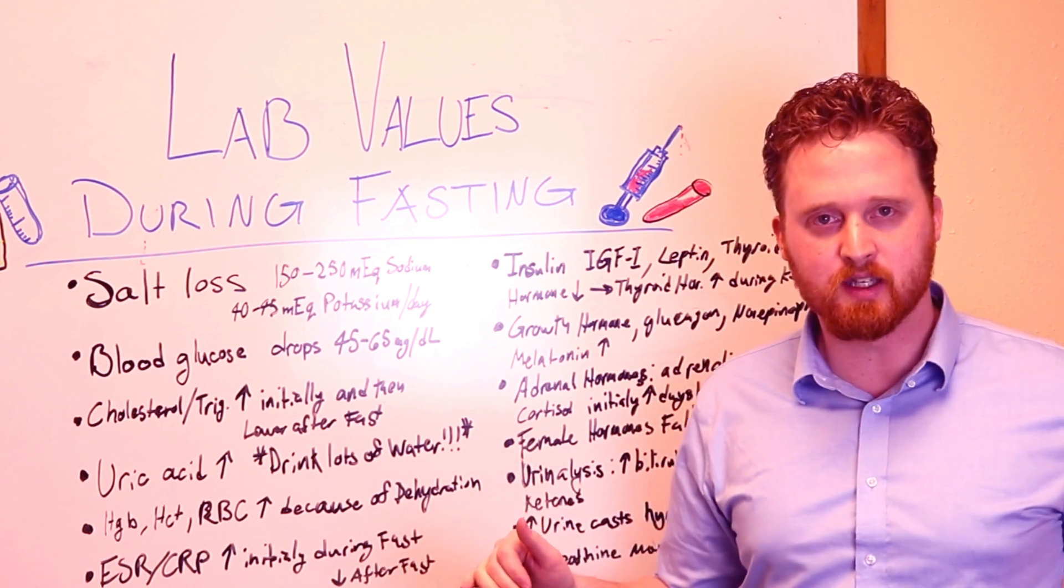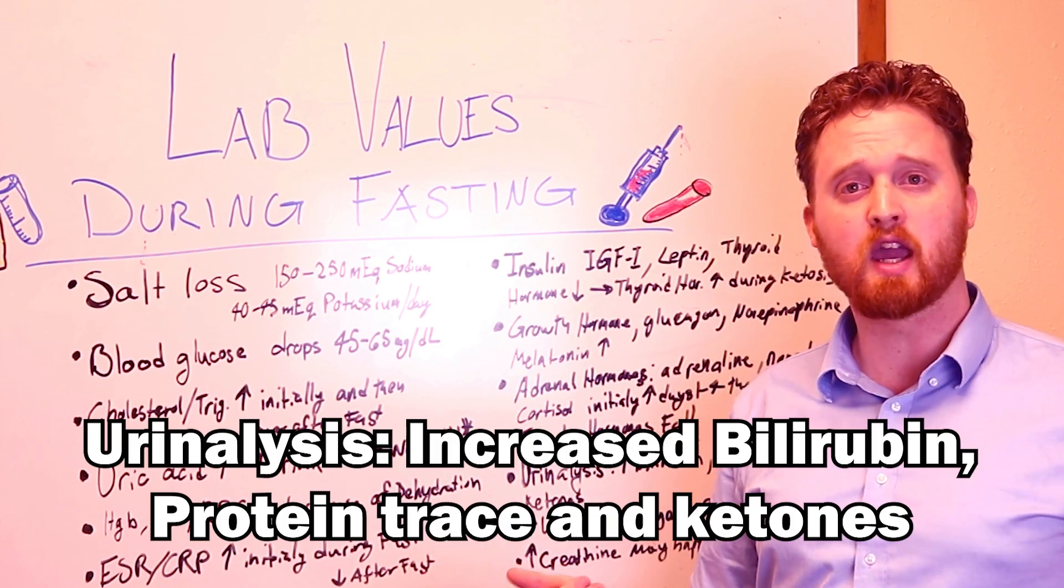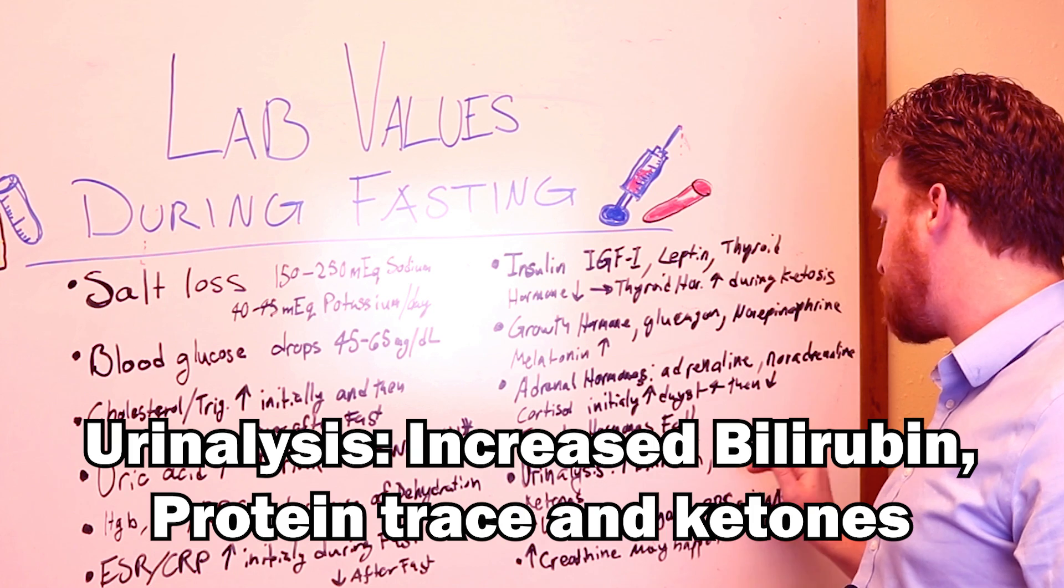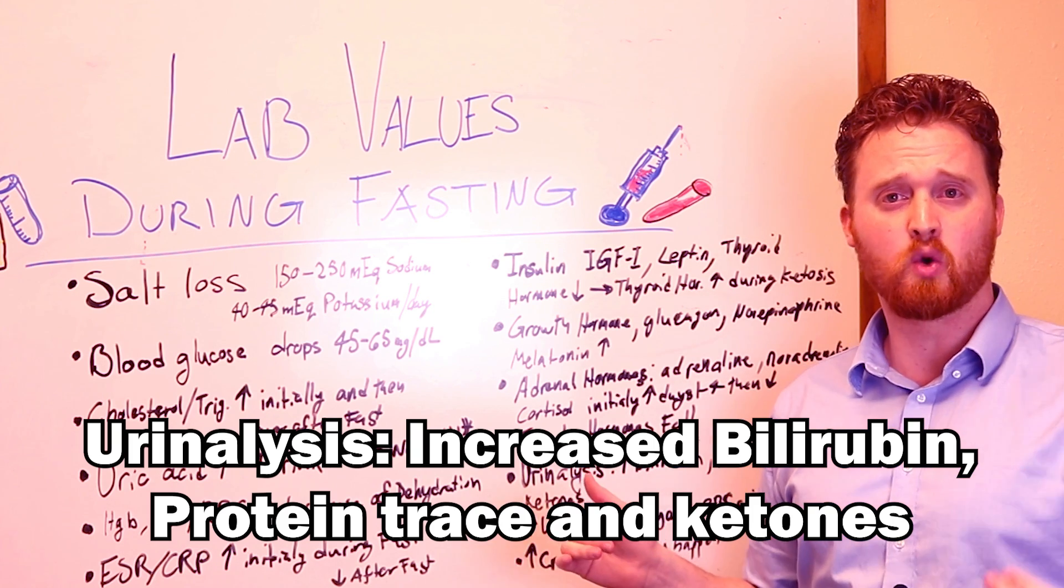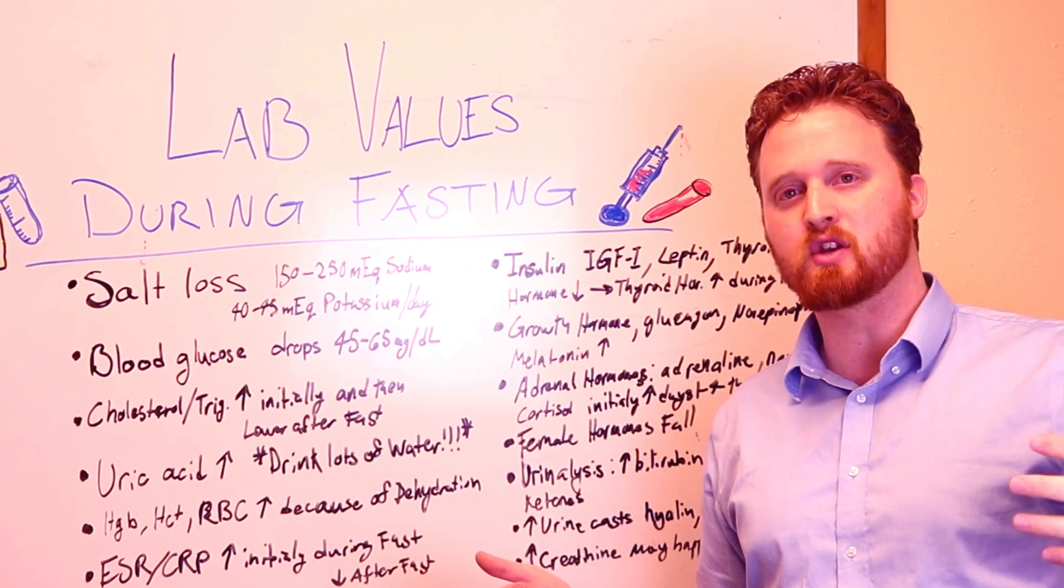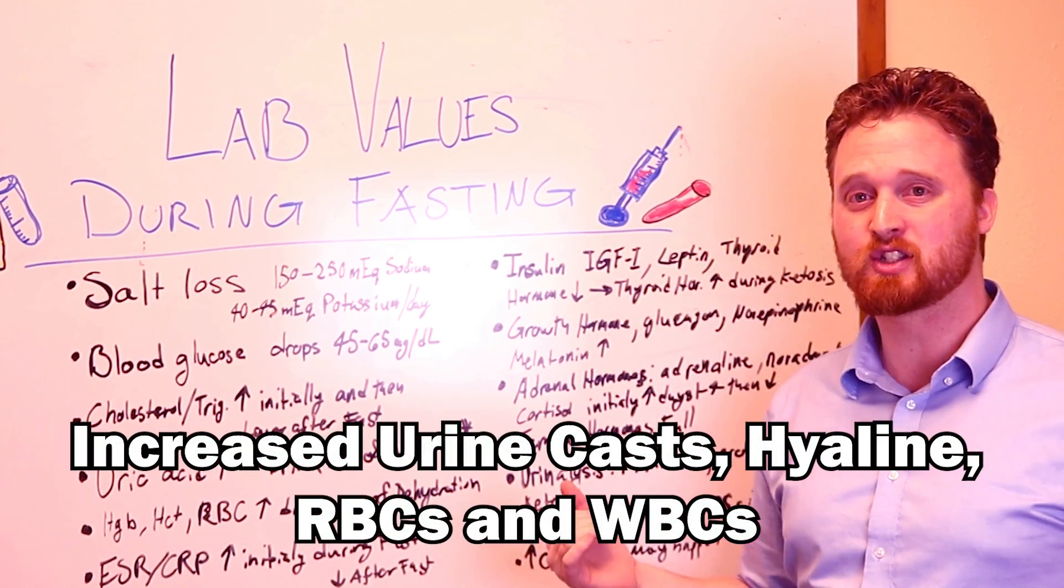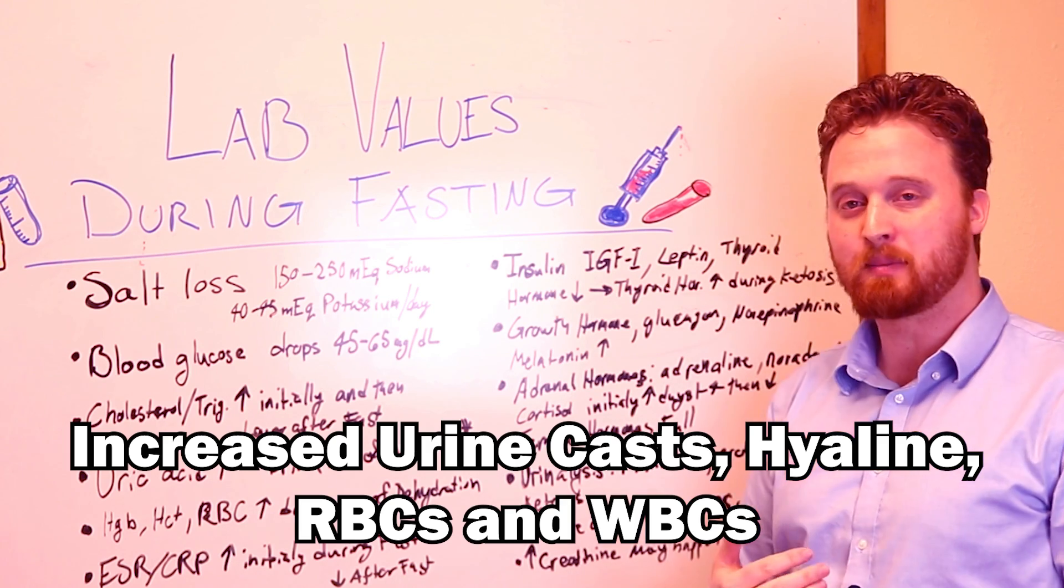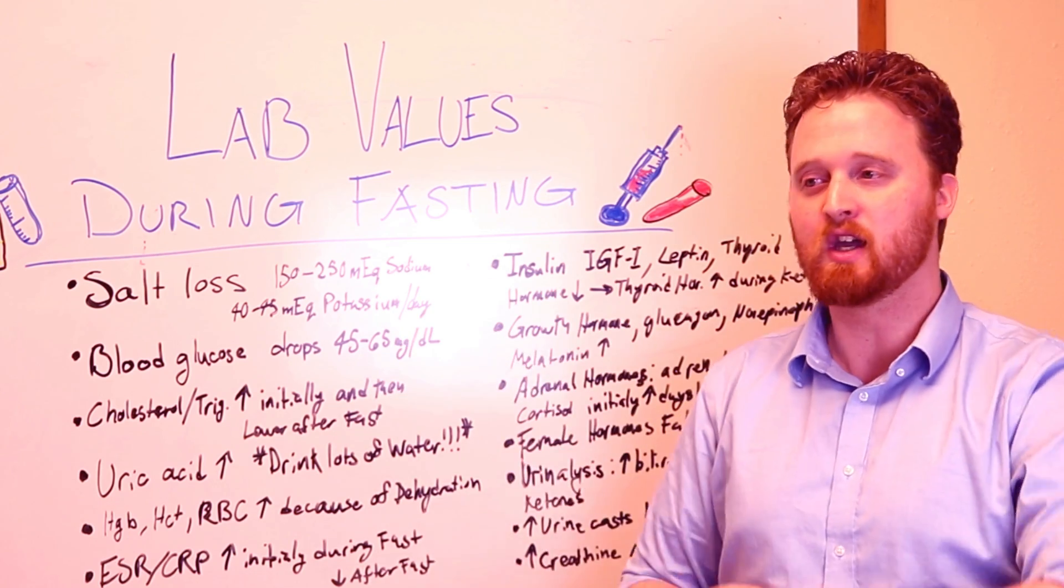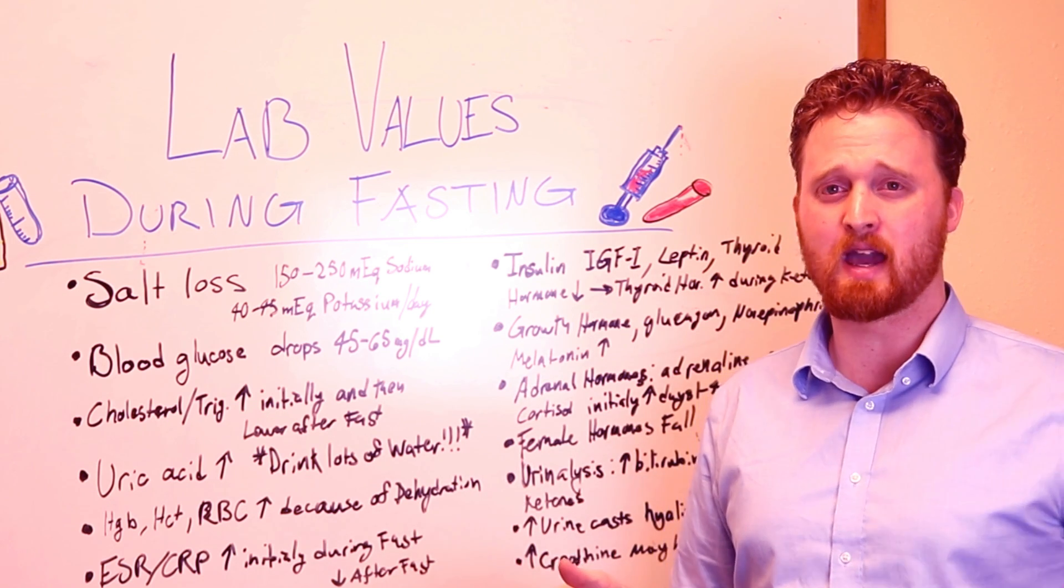The other thing is looking at urinalysis. Something that is very important to look at is urinalysis when it comes to fasting and things that can change in your urine. This is something that we check in labs: bilirubin can increase as well as protein, traces of protein can be shown in the urinalysis as well as ketones. Obviously ketones, because when you're in a ketosis state, your ketone levels are going to go up, so that's going to show up in your urinalysis. And then other things that can show up is increased urine casts, things such as hyaline and red blood cells, as well as white blood cells can be shown in the urinalysis while you're fasting because we're going through autophagy, going through things that are getting rid of unnecessary cells and it can show up in the urinalysis.